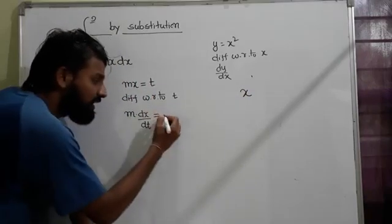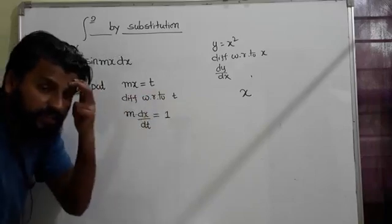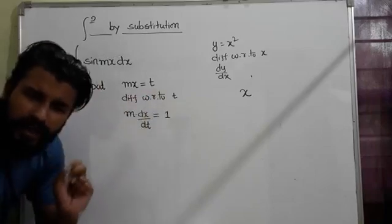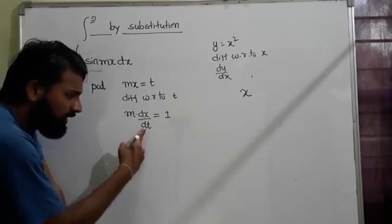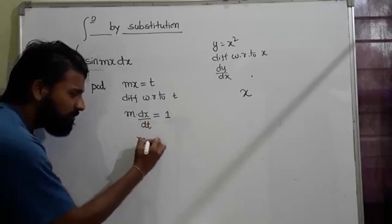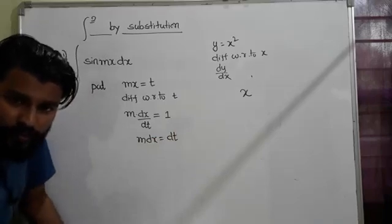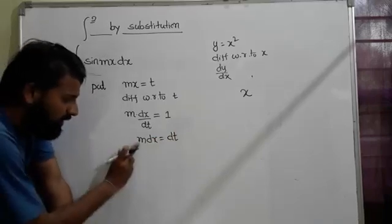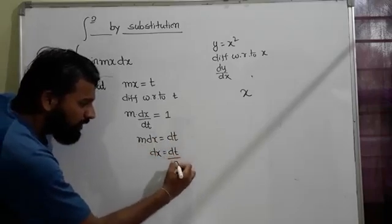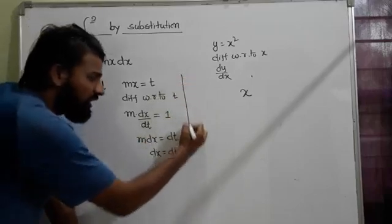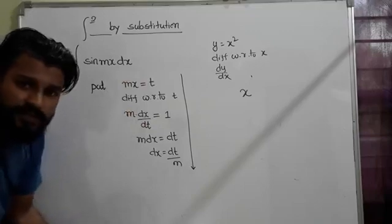So differentiating with respect to t, I hope you understand. This is m·dx = dt. Now according to us, this will be dx = dt/m. This whole thing is called adjustment or substitution - this method is called substitution.